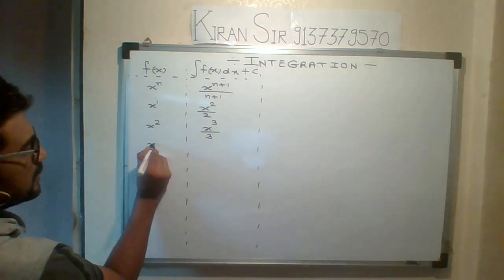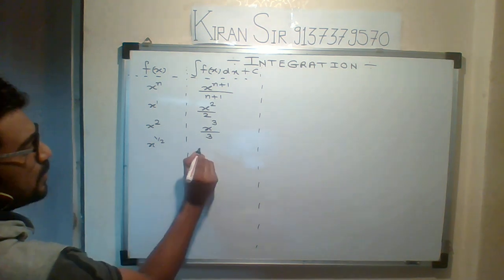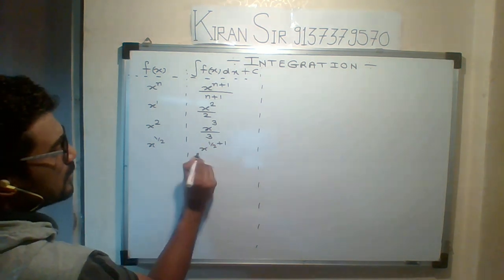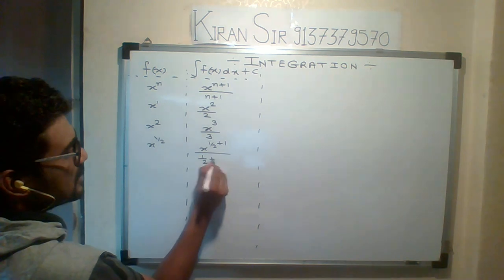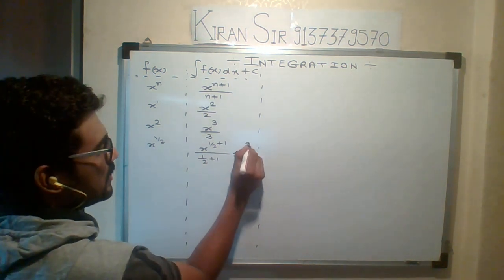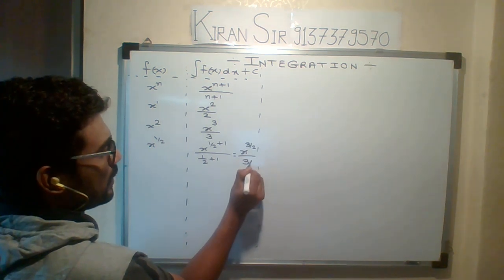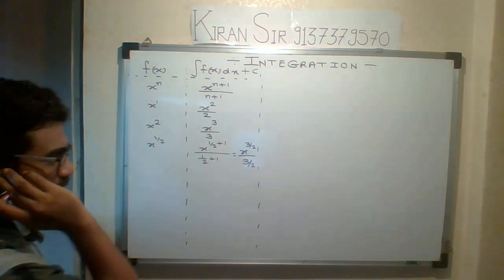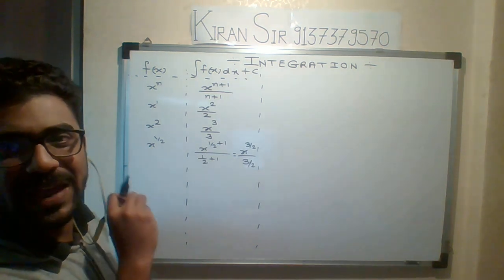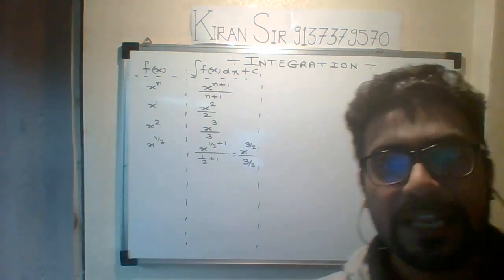Another example: x raised to 1 by 2. So what is the integration of x raised to 1/2? It becomes 1/2 plus 1 upon 1/2 plus 1. This addition gives 3/2 upon 3/2, so the power is 3/2 and we multiply by 2/3. In this way, you can take the integration of any x function with any power.